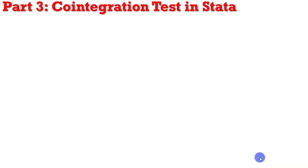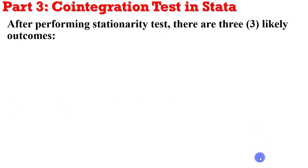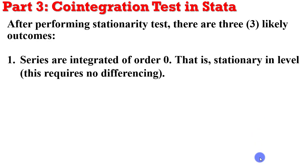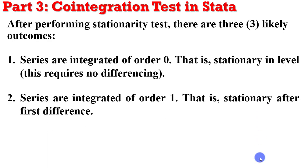Welcome to the concluding part of our series on cointegration tests in Stata. In our previous videos, I mentioned that you are likely to have three outcomes after performing your unit root test. The first outcome could be that the series are all stationary in levels. The second outcome could be that the series are all stationary after first difference.